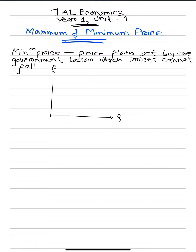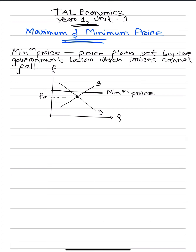For minimum price, the diagram has quantity on the x-axis and price on the y-axis, with demand and supply curves. PE is the equilibrium price. Minimum prices are usually set above the equilibrium — they're set where prices are perceived to be too low. The government sets a price floor above the equilibrium, below which prices cannot fall. With higher prices, producers are willing to supply more — say Q2.